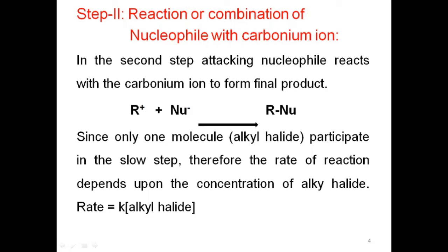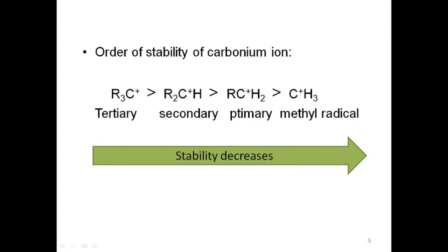Only one molecule — yani alkyl halide — participates in the first step, which is the slow step. That's why it is known as unimolecular, yani only one molecule. In the rate determining step, only one species, that is alkyl halide, is involved. Therefore, the rate of reaction depends upon the concentration of alkyl halide only.